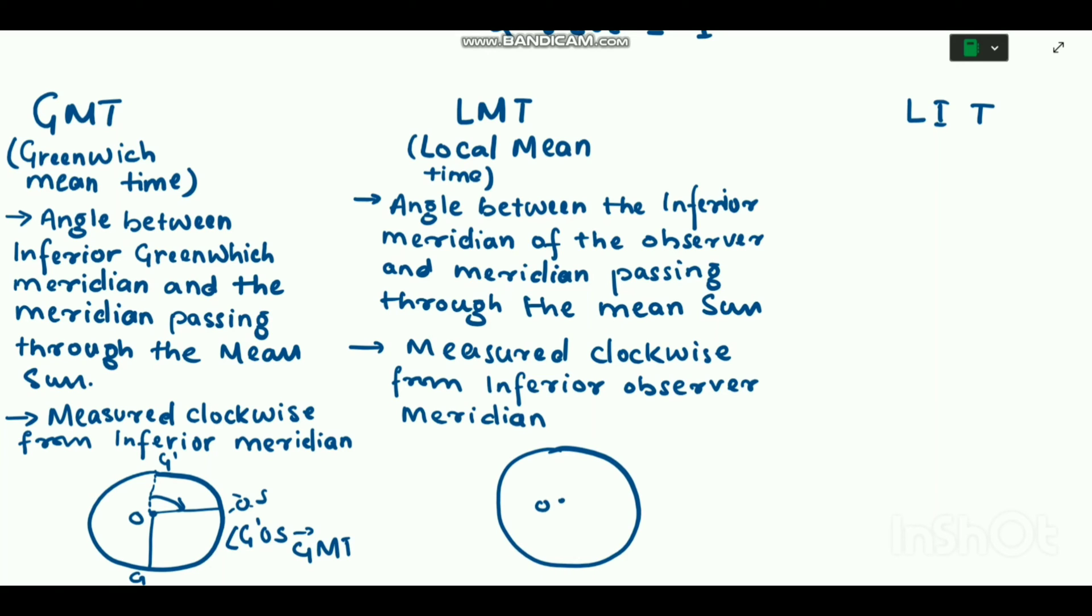So in this picture you can see LO is the meridian of the observer and L dash O is the inferior meridian of the observer, and angle L dash O S is the LMT, that is local mean time. Now we will see what is LIT.